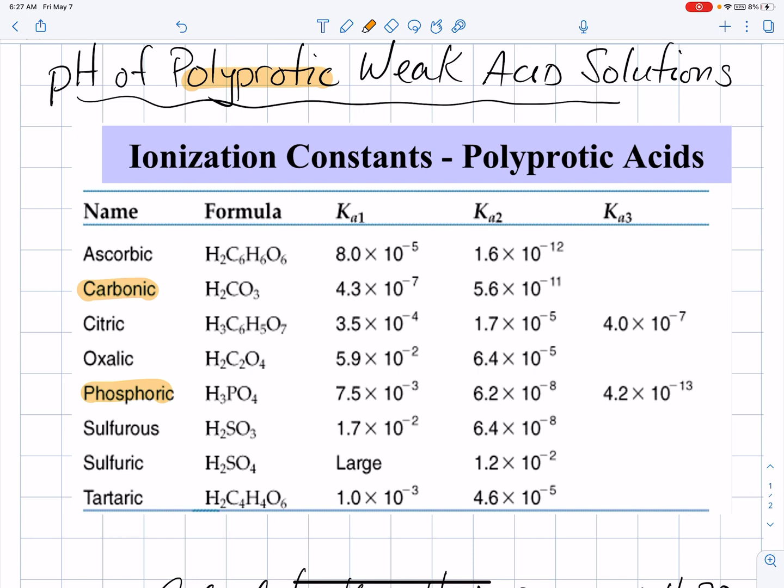If it's a diprotic acid, it'll have two Ka values, one for each step of its ionization. If it's triprotic, it'll have three Ka values, again, one for each step of the ionization.